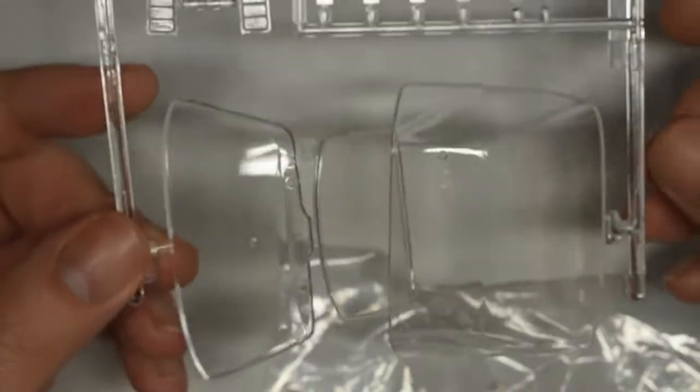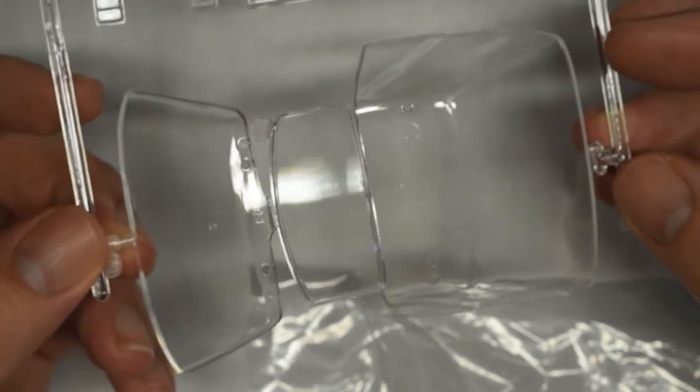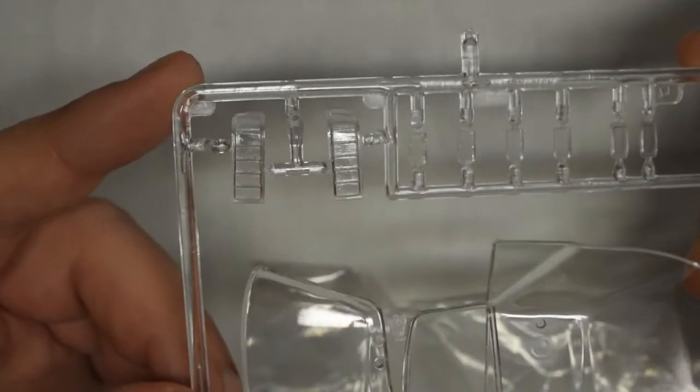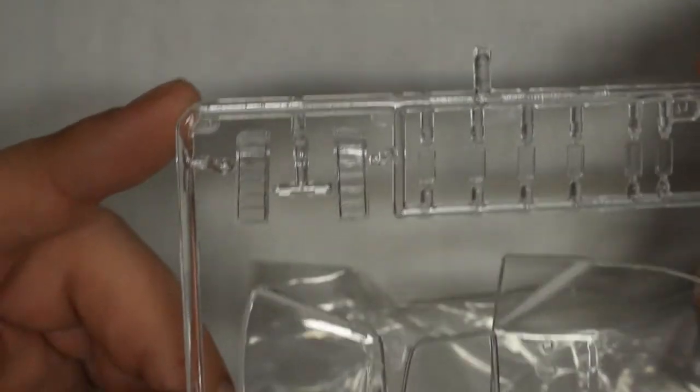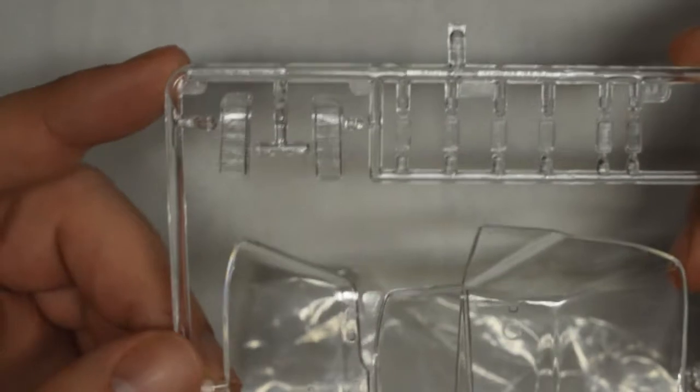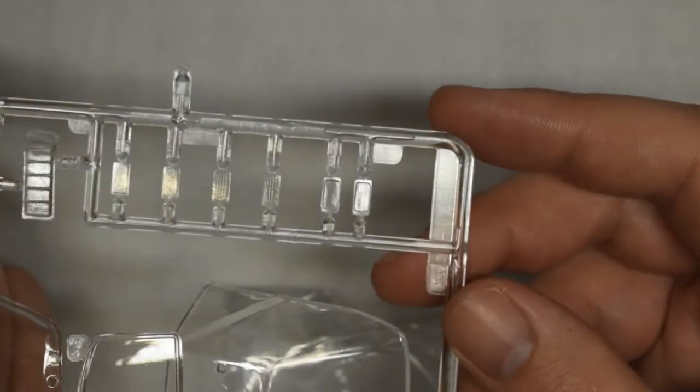Clear parts. I like what I see here. We've got a pretty nicely molded windshield, a sunroof, rear window, and all my favorite clear taillights. Remember, you can make a clear part red, you cannot make a red part clear. And real headlights, and it looks like fog lights. So, a nice clear parts tree.